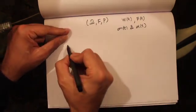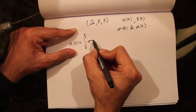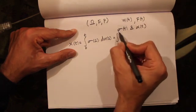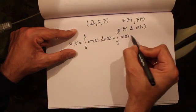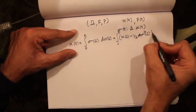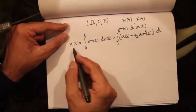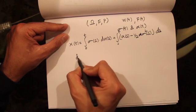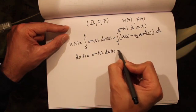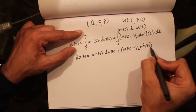Let's also consider two adapted stochastic processes given by sigma of t and alpha of t. Let's further define an Itô process given by X(t) equal to the integral from 0 to t of sigma(s) dW(s) plus the integral from 0 to t of alpha(s) minus one-half sigma squared(s) ds. In differential terms we can write this as dX(t) = sigma(t) dW(t) plus alpha(t) minus one-half sigma squared(t) dt.